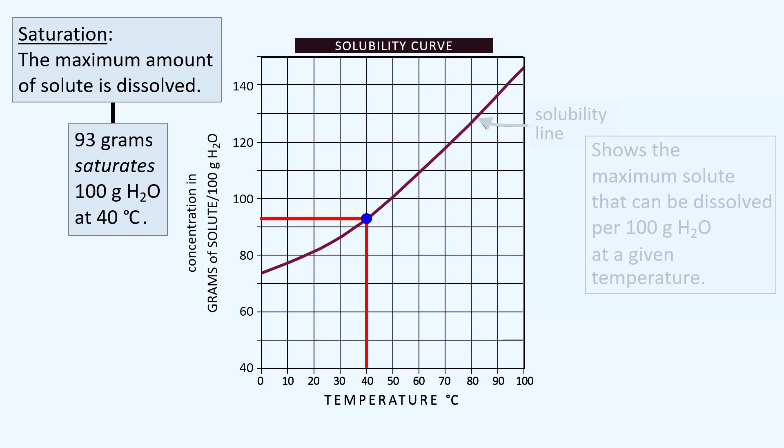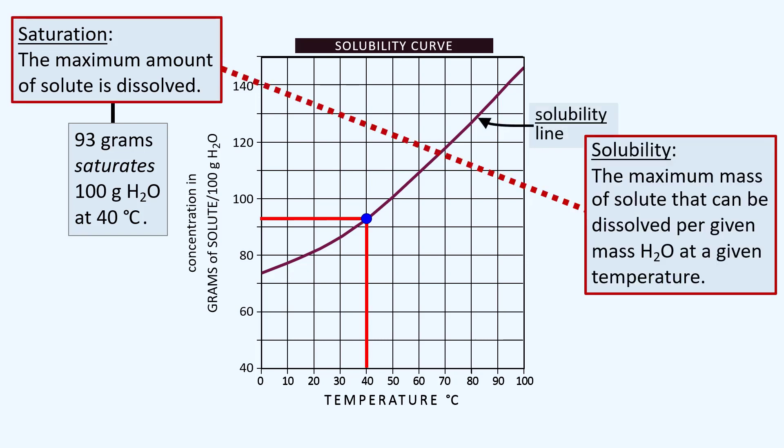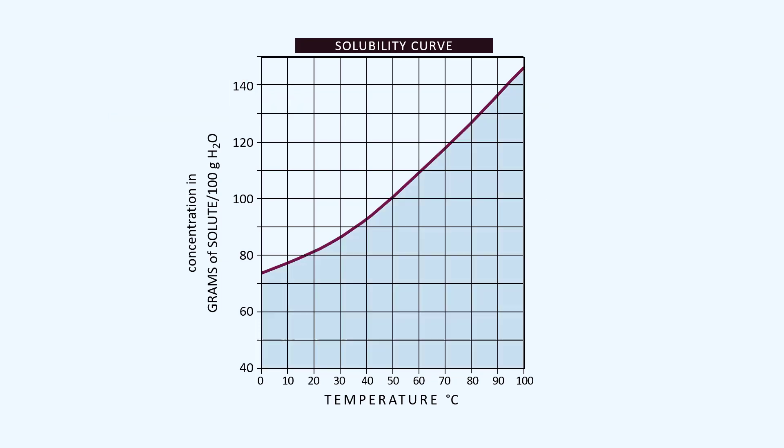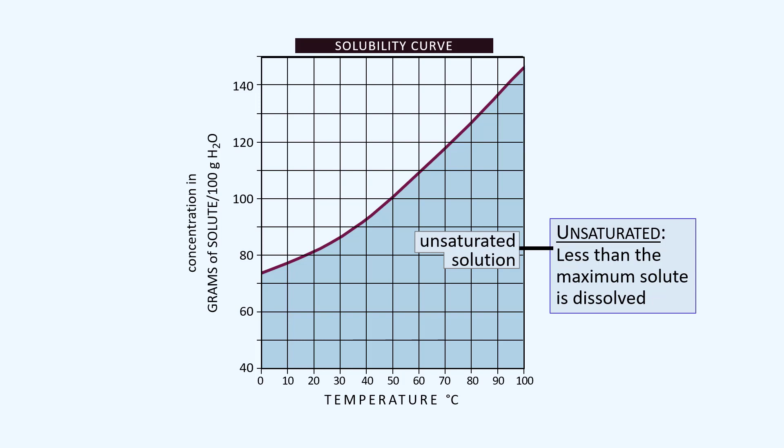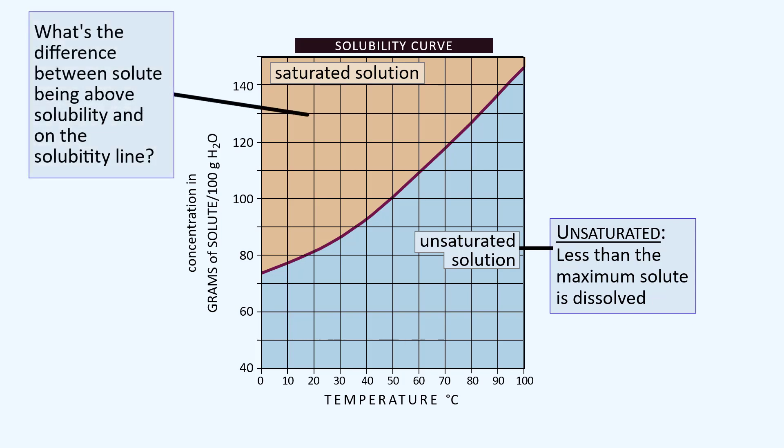The term solubility, however, is more specific. It is quantitative. Solubility is the maximum mass of solute that can be dissolved per given mass of water at a given temperature. Any condition of concentration and temperature below the line is considered unsaturated. Less than the maximum solute is dissolved. Any condition of concentration and temperature above the line is saturated. So what's the difference between that and being on the line?